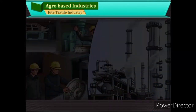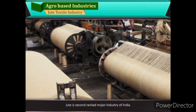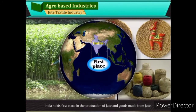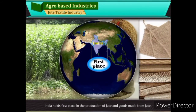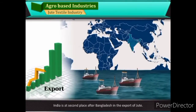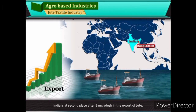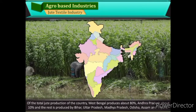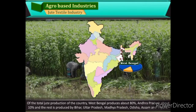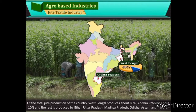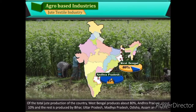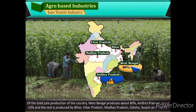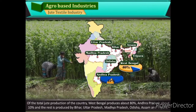Jute Textile Industry: Jute is the second-ranked major industry of India. India holds first place in the production of jute and goods made from jute. India is at second place after Bangladesh in the export of jute. Of the total jute production of the country, West Bengal produces 80%, Andhra Pradesh produces about 10%, and the rest is produced by Bihar, Uttar Pradesh, Madhya Pradesh, Odisha, Assam, and Tripura.